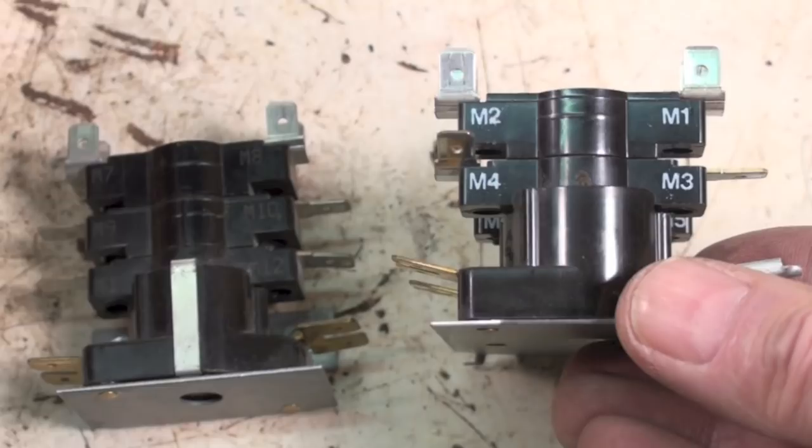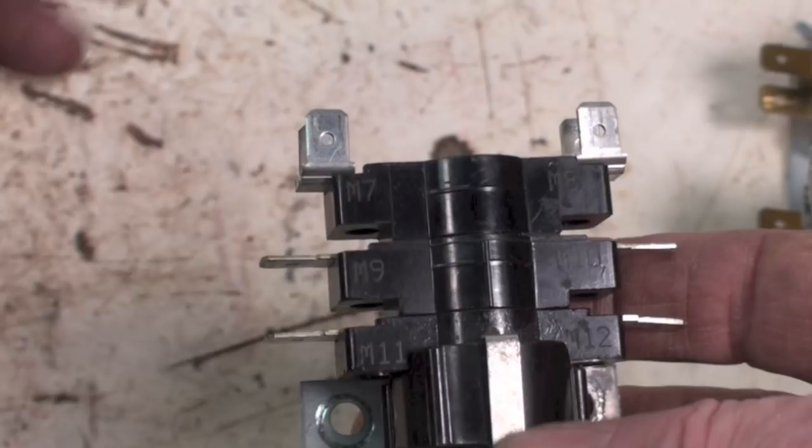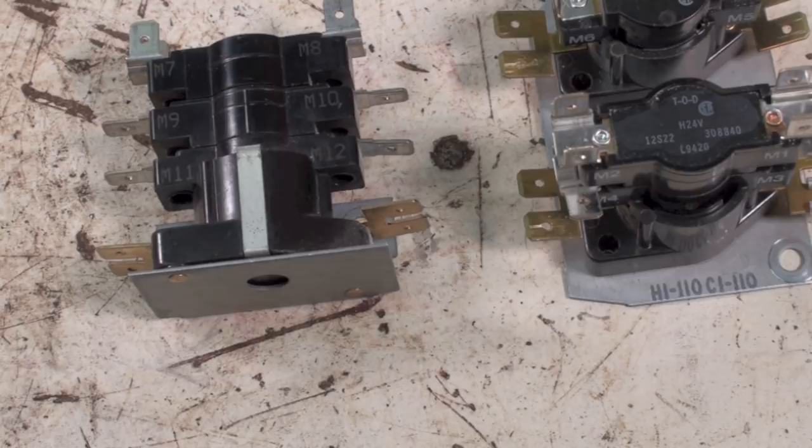So when M1 and M2 close, the fan starts, the first element comes on, then a little later, three and four, five and six, seven and eight, nine and ten, eleven and twelve. That would be the sequence that they come on.